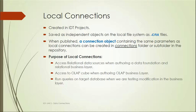Local connections are created in IDT projects. I will be showing practically how we can create them. They are saved as independent objects on the local file system with the extension .cnx. When this connection is published, a connection object containing the same parameters as the local connection can be created in a connections folder or subfolder in the repository.